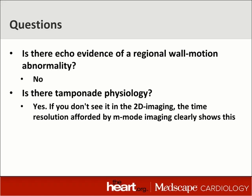So, here are some questions. Is there a regional abnormality? It doesn't seem to be. The wall thickening in all of the views — the parasternal long axis, the apical four, and the apical two-chamber views — all looked okay. Certainly no echo evidence of any previous infarction. Is there tamponade physiology? Well, we covered that. You can see it in the imaging very clearly. You can also look at the M-mode images, which gives additional time resolution, demonstrating that the RVOT starts to expand considerably after the aortic valve is closed and after the mitral valve has opened.